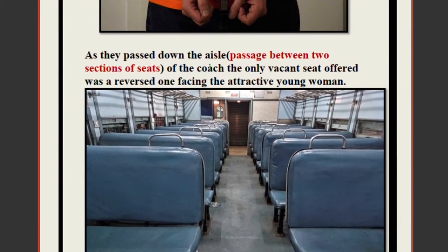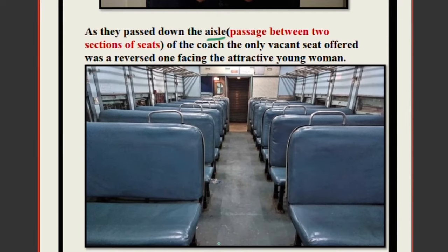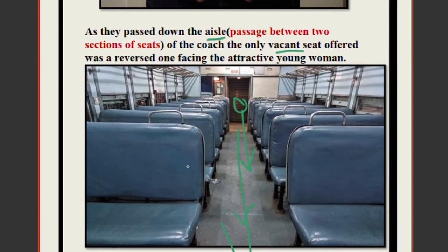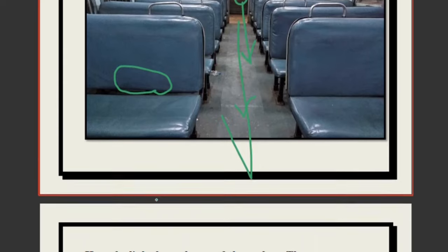As they passed down the aisle — the walkway between the seats inside the train — these two people who were handcuffed walked through the coach. The only vacant seat offered was a reversed one facing the attractive young woman. We already know there was a young woman sitting inside the train; at Denver, these two people got in and the only empty seat was opposite the young lady.